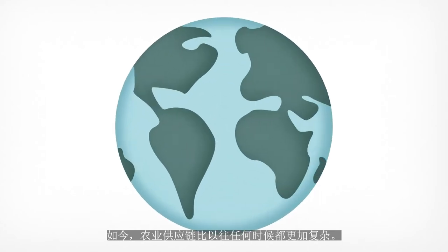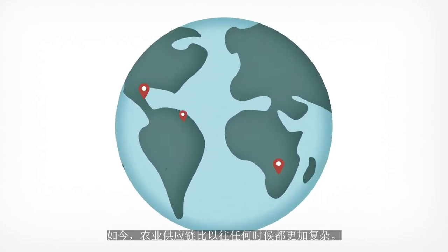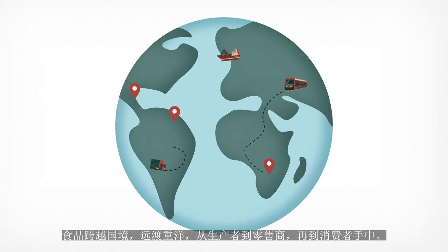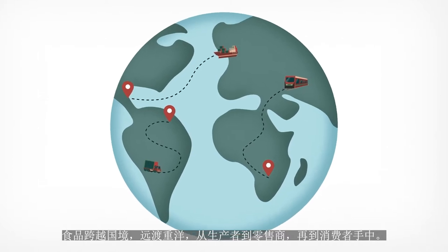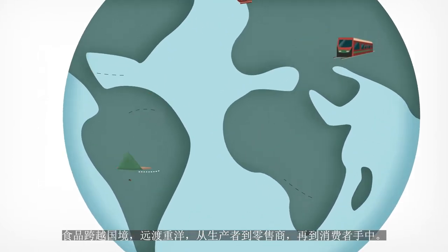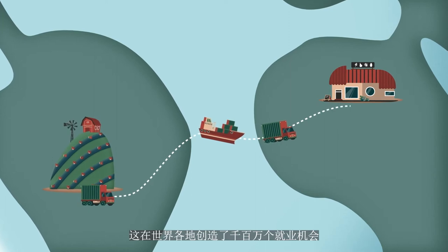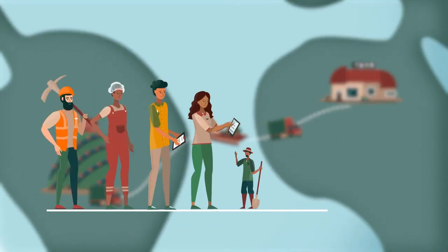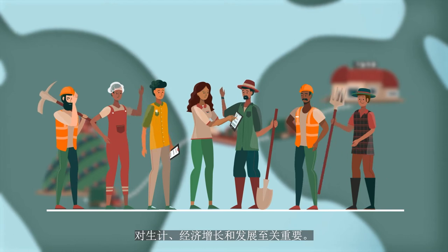Today, agricultural supply chains are more extensive than ever. Food crosses countries and oceans, moving from producers to retailers to consumers. These dynamics create millions of jobs around the world, critical for livelihoods, economic growth and development.